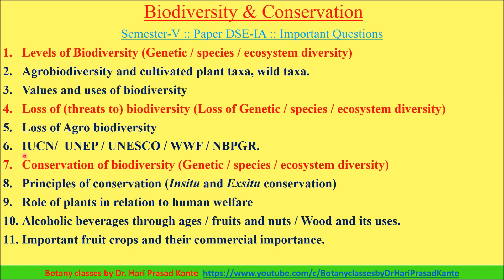Next, management institutions: IUCN, UNEP, UNESCO, WWF, NBB, and JR — their locations and functions are important. Next, in-situ conservation and ex-situ conservation. Fourth unit: role of plants in relation to human welfare — this is the most important question.